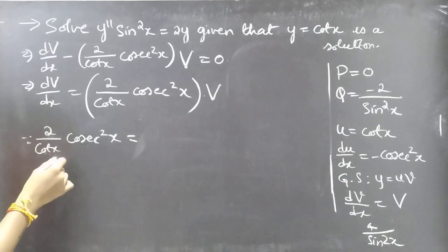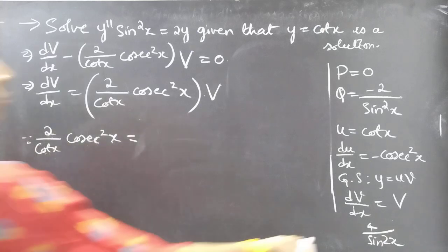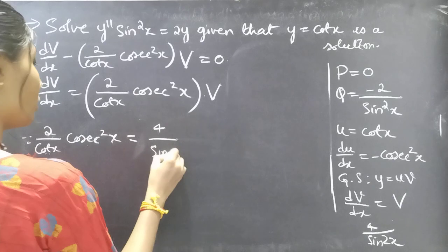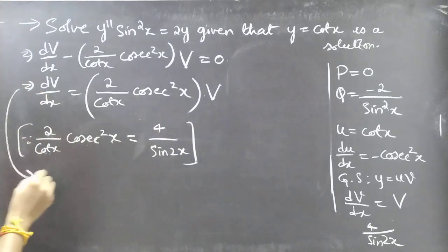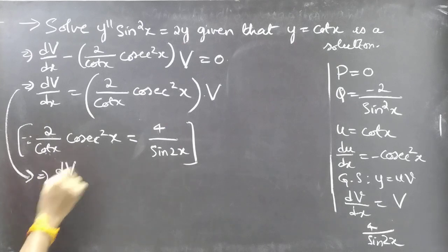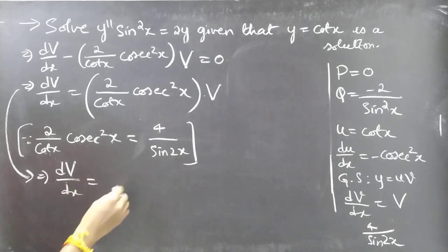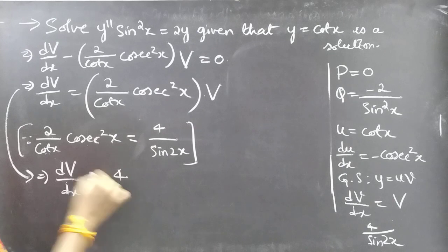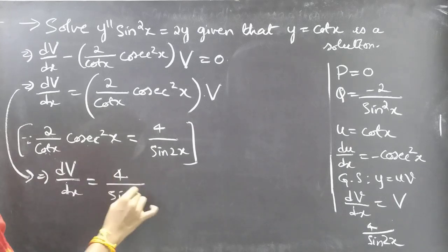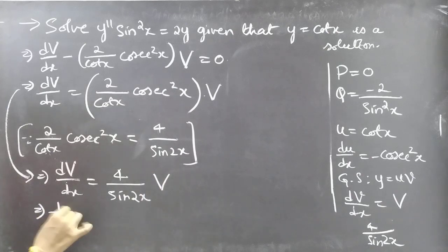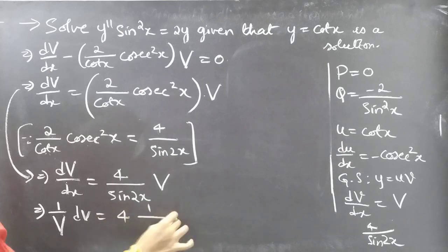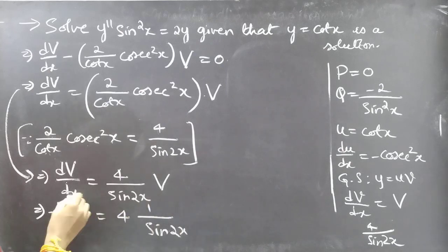Therefore (2/cot x)·cosec²x = 4/sin 2x, and the equation becomes dV/dx = (4/sin 2x)·V. Separating variables: (1/V)·dV = 4·(1/sin 2x)·dx, which we write as (1/V)dV = 4·cosec 2x · dx.